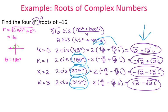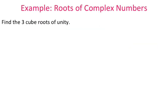With the Theorem on nth roots, the formula looks complicated, but the actual pieces aren't so bad. You just have to work through several pieces since you'll have more than one answer. Now, find the three cube roots of unity. Unity is a fancy way to say 1.